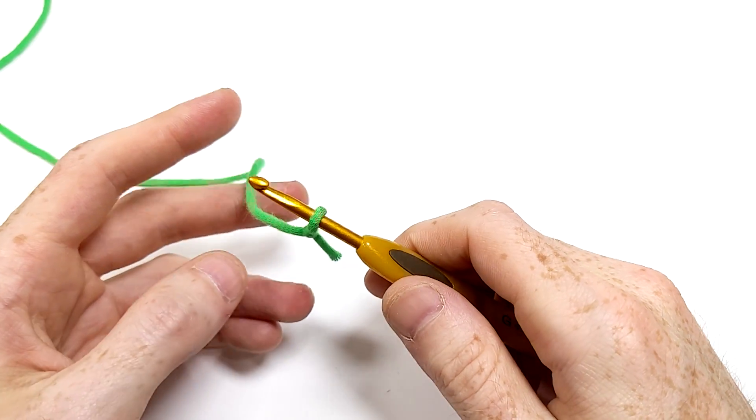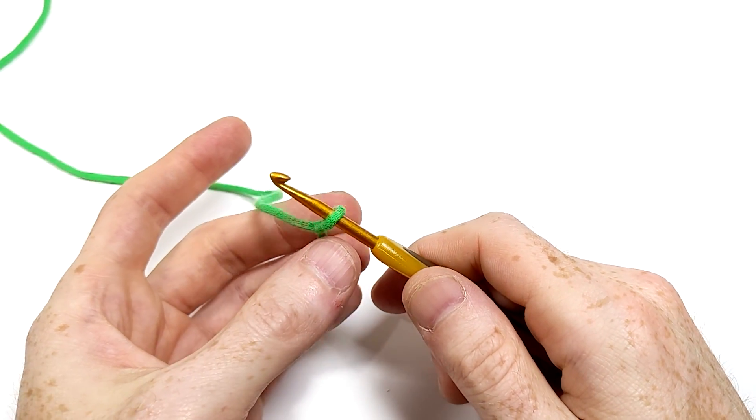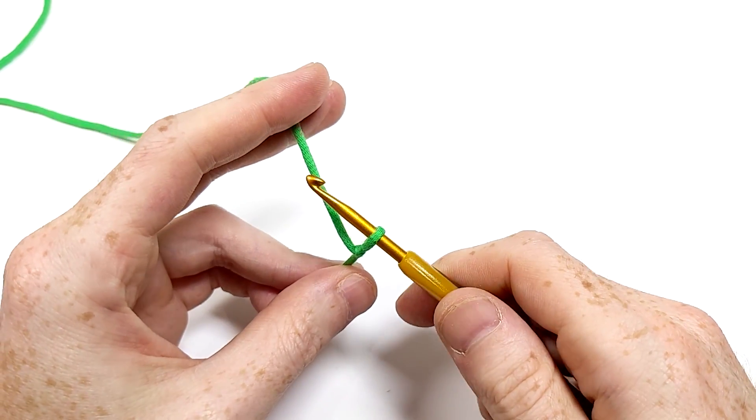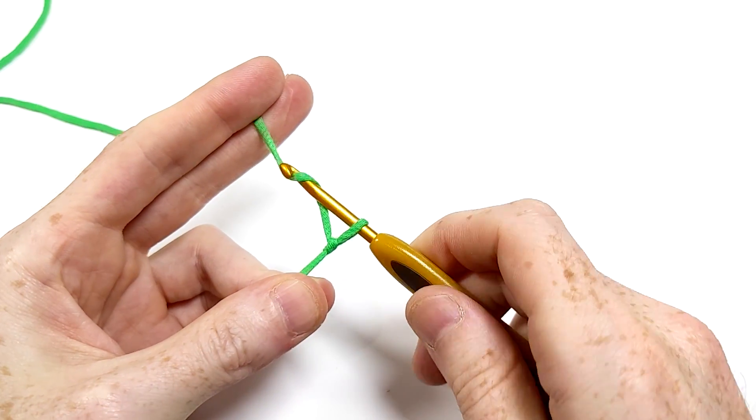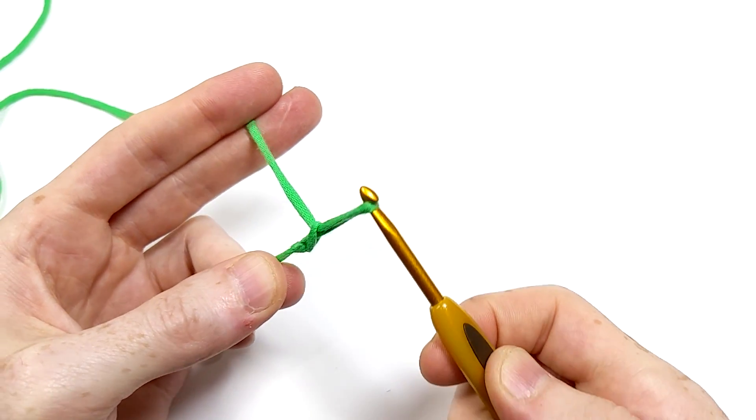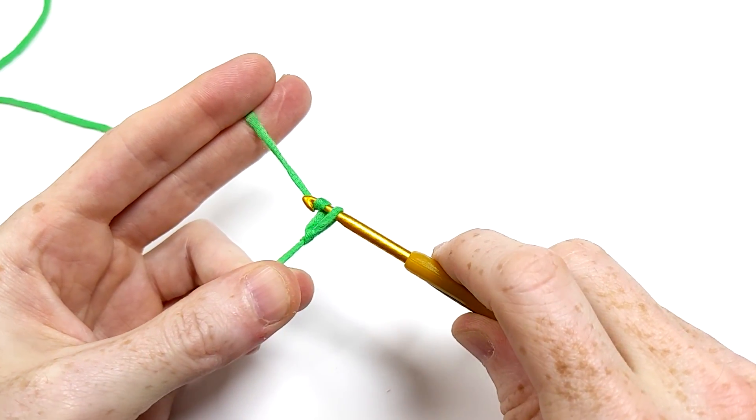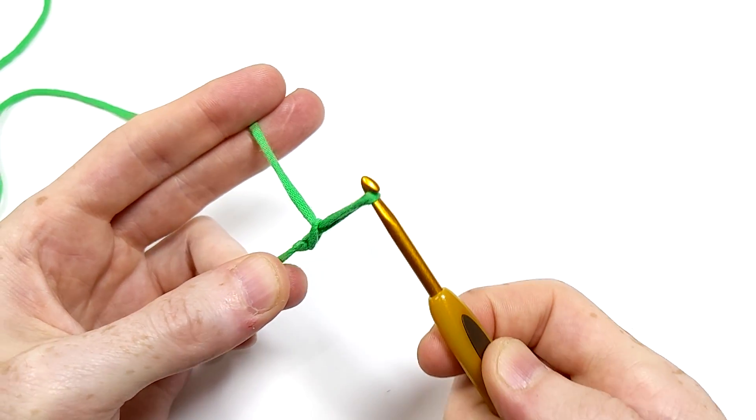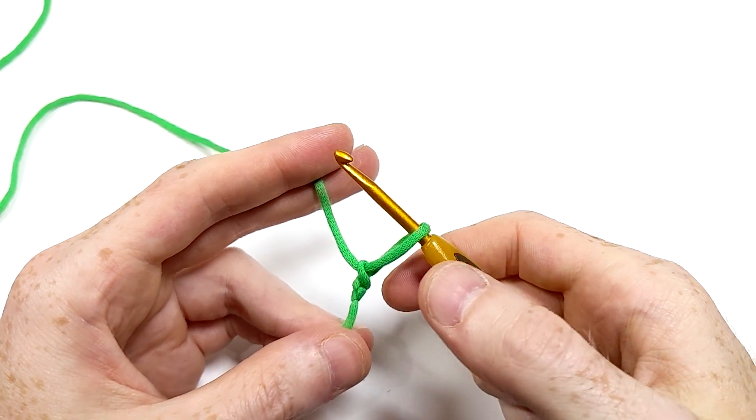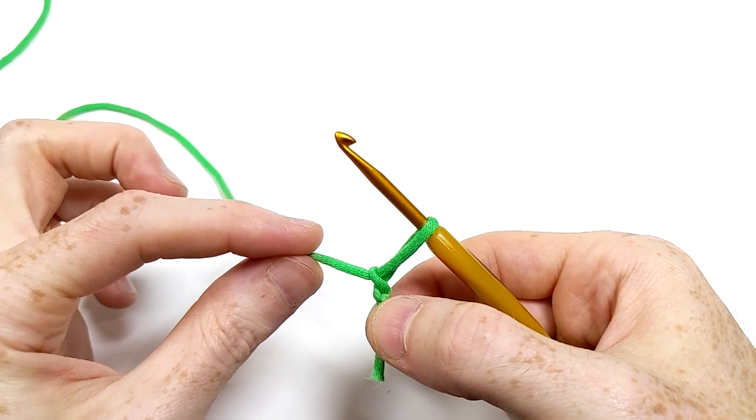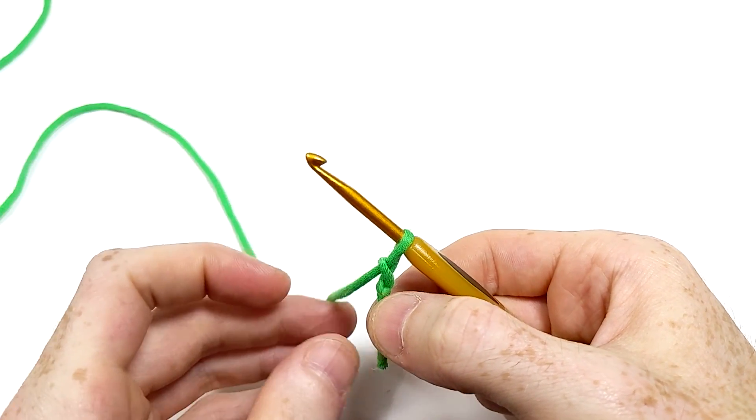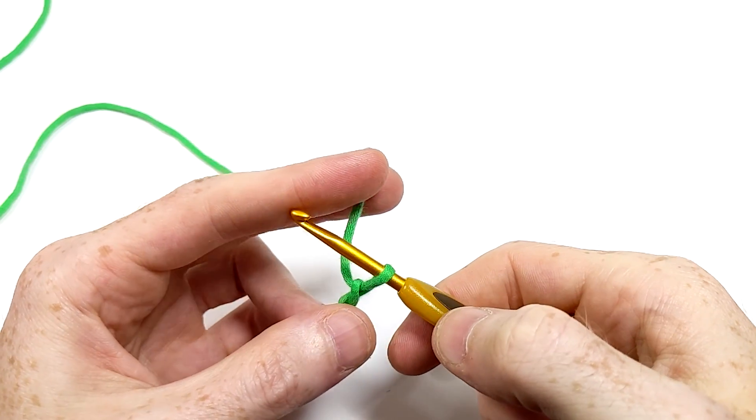Now the fun starts! We're gonna turn the slipknot into a chain. Use the hook to grab yarn from the long end and pull it through. The easiest way is to twist the hook around the yarn as you pull it through so it doesn't slip off. You don't need that much tension, and if you have too much slack, you can just tighten it after you've already pulled it through. We're gonna do this chaining twice, so one more time.